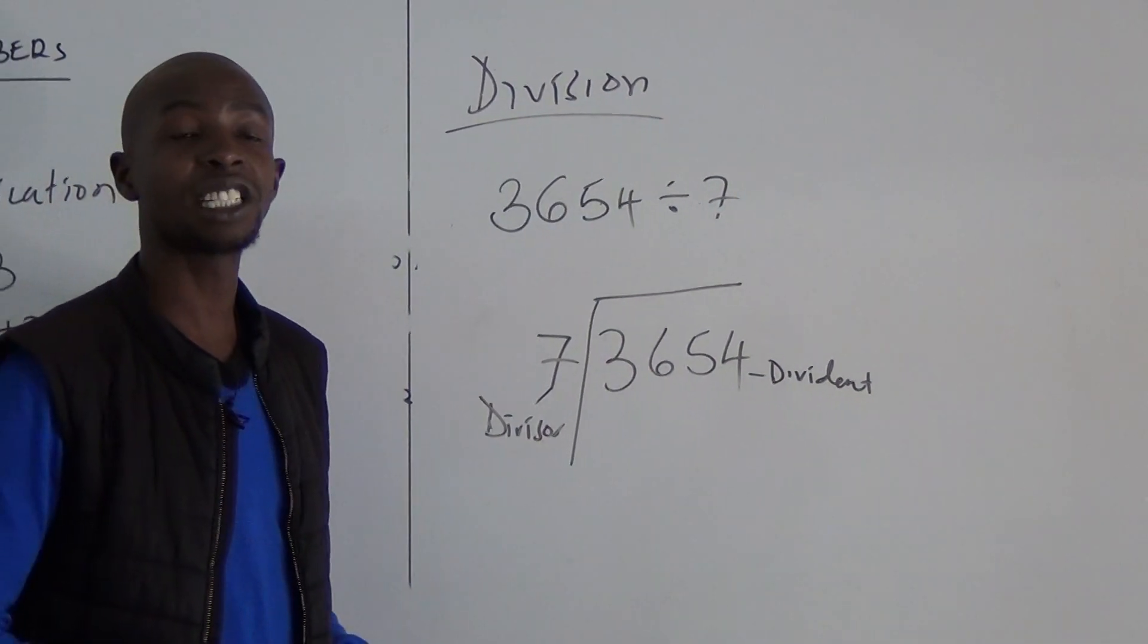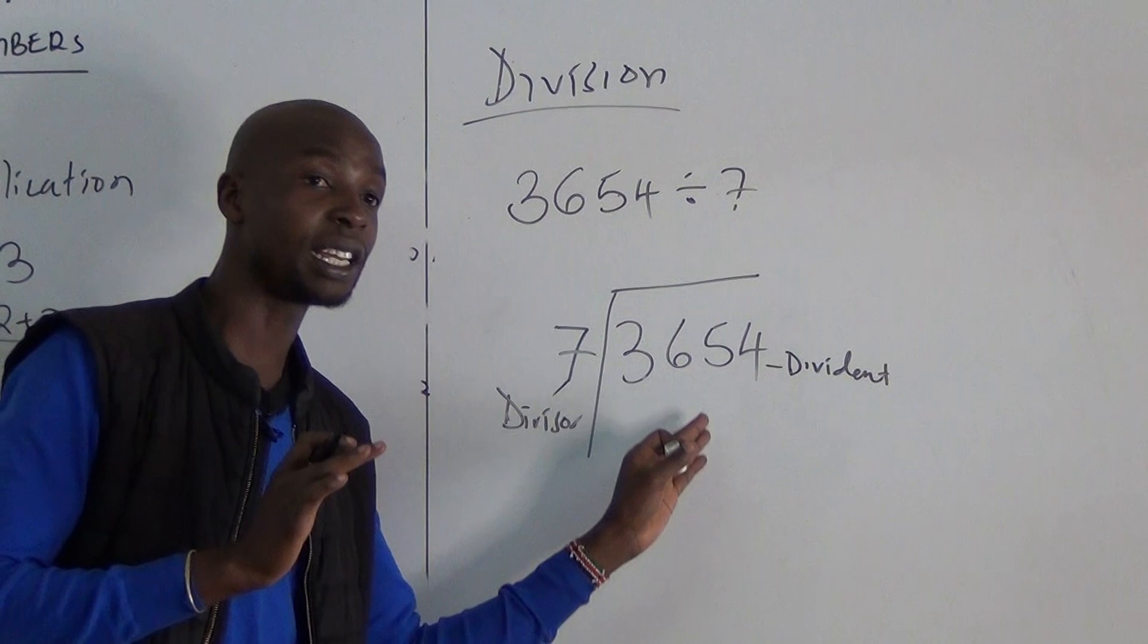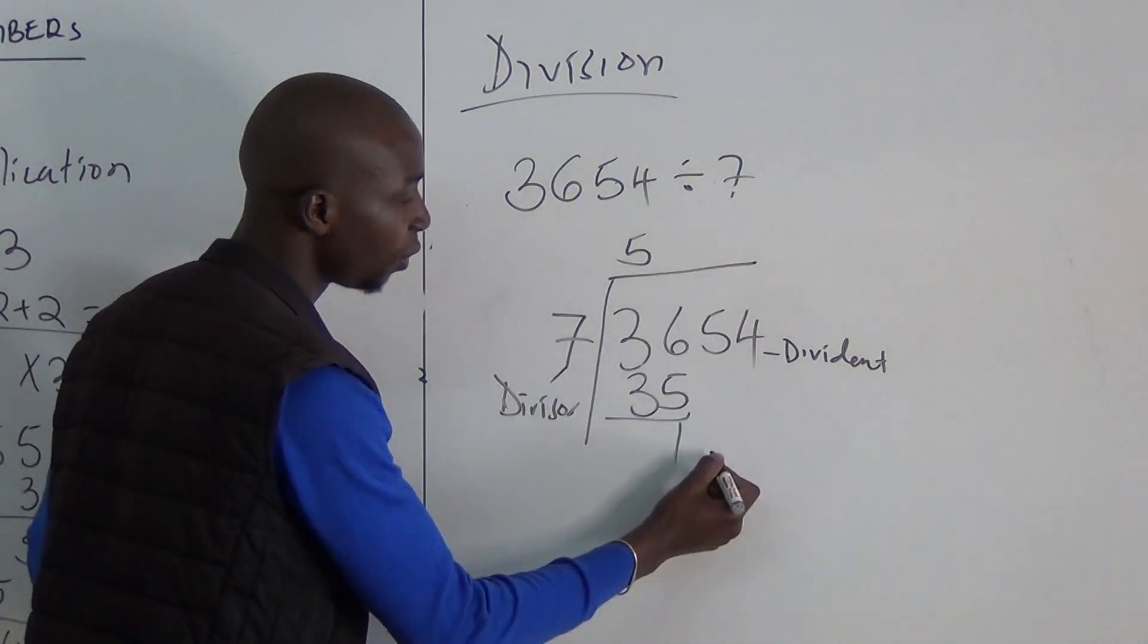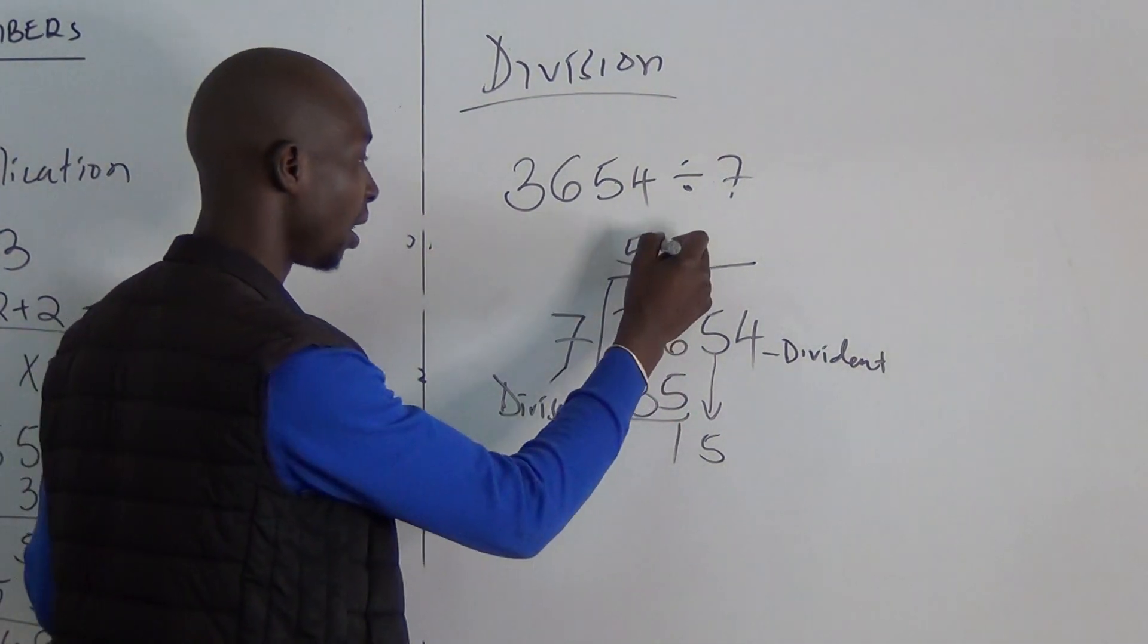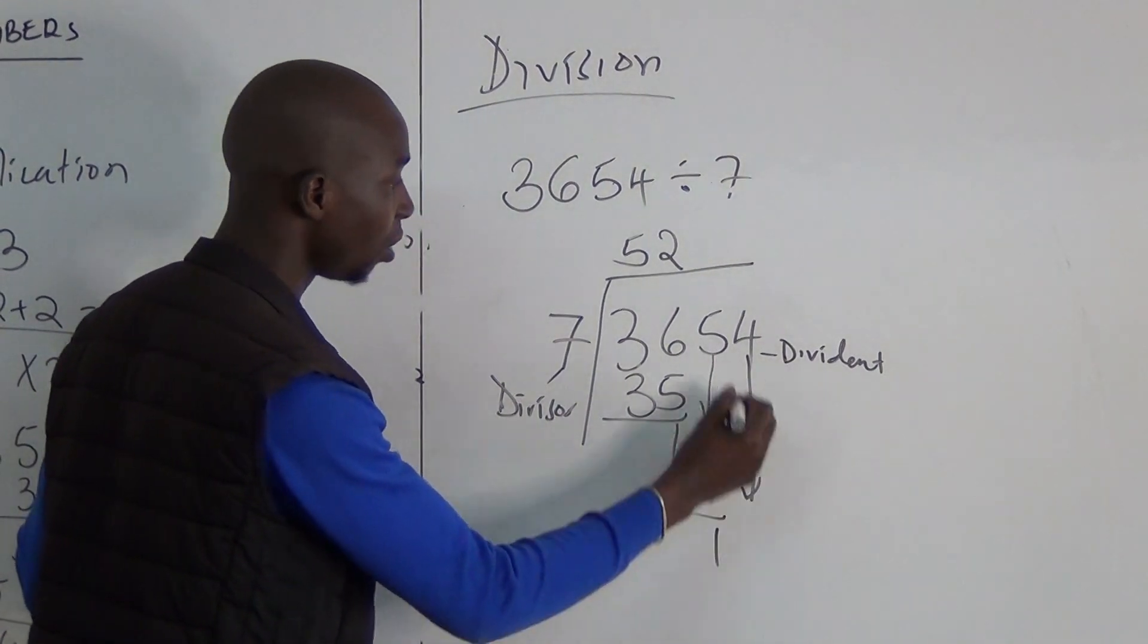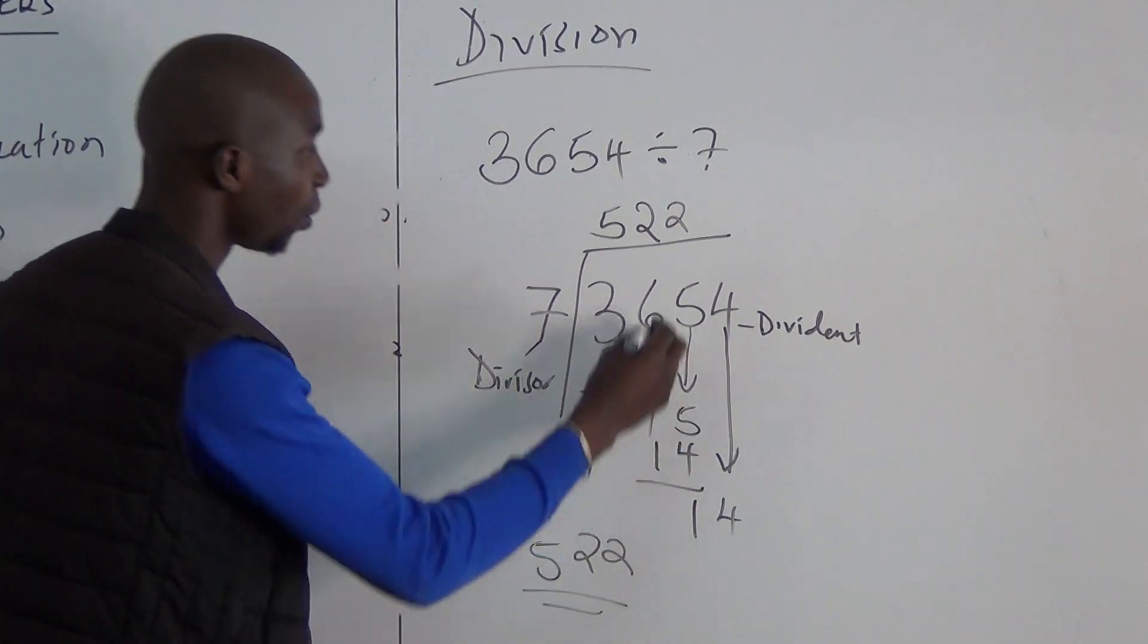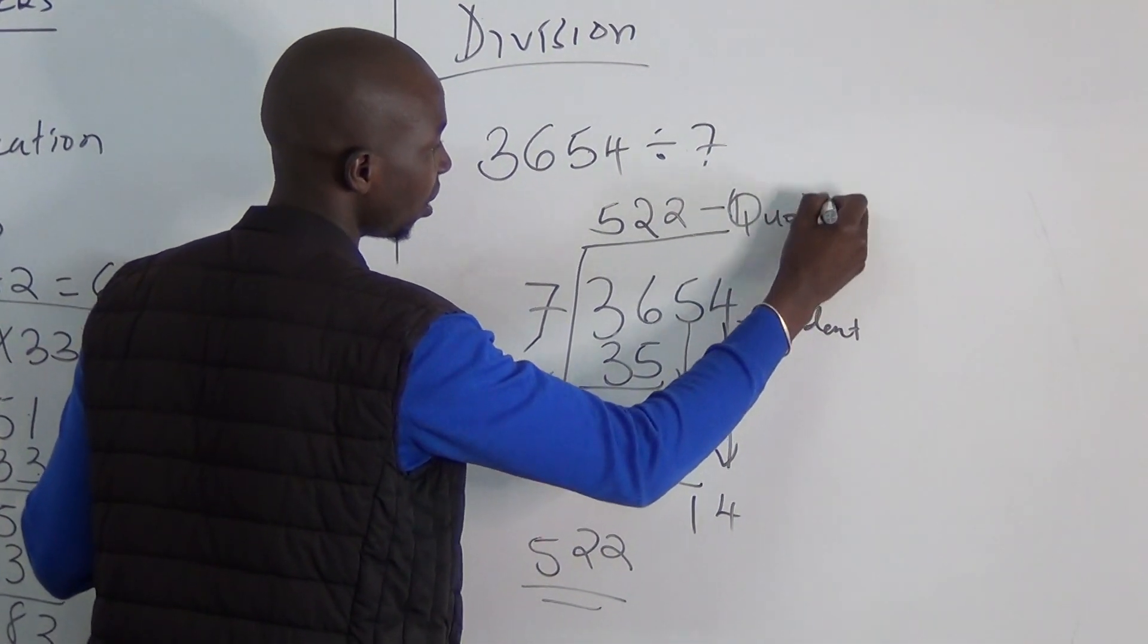We want to find what is called quotient. And quotient is found by, this one goes here. 7 cannot go into 3, but in 36 it goes how many times? 5 times, which is 35. You write that 35 here. You subtract, you get 1. You bring this one down. It goes into 15, yes, how many times? Twice, which is 14. What is remaining? 1. I then pull this one down. I get 14. Can 7 go into 14? Yes, how many times? Twice. So the answer is 522. And this is what we call the dividend, divisor, and this is what we call quotient.